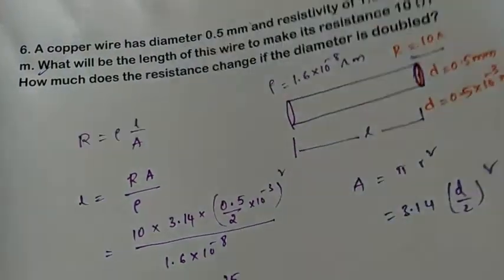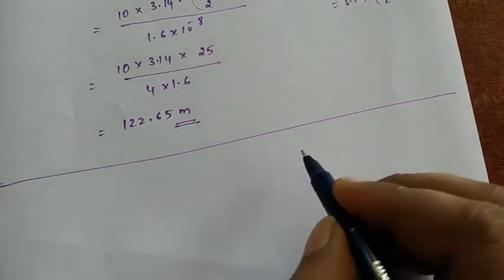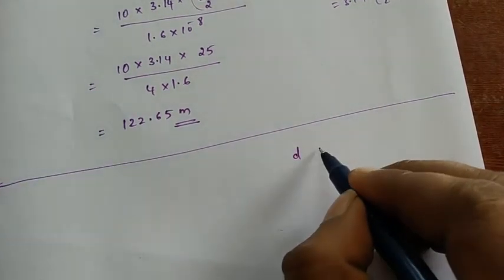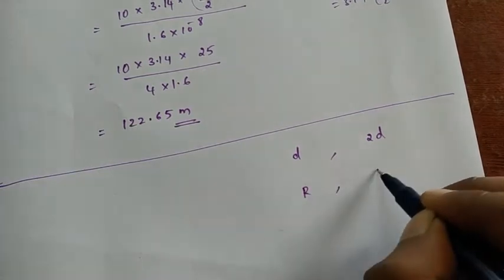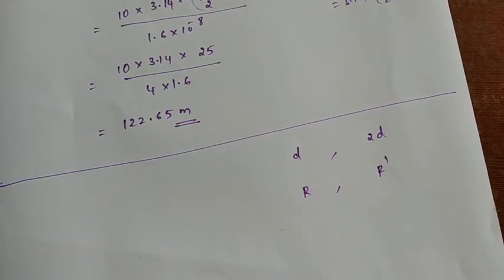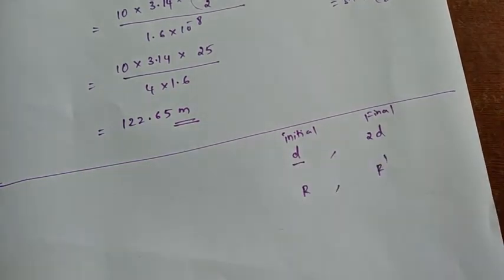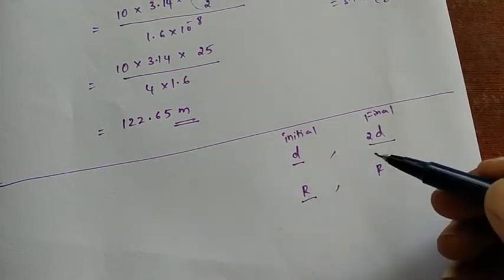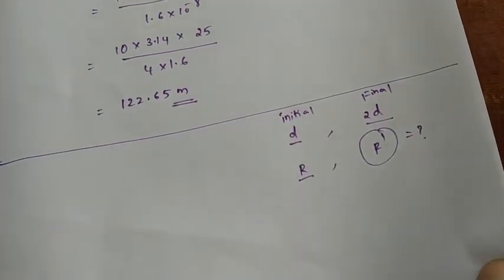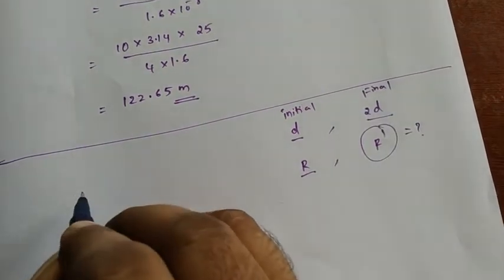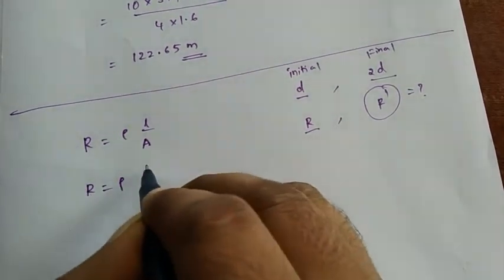If the diameter is doubled, initially diameter is d. Now the new diameter is 2d. Initially resistance is R, and we need to find the new resistance R'. We find the relationship between diameter and resistance using the formula R = ρL/A.